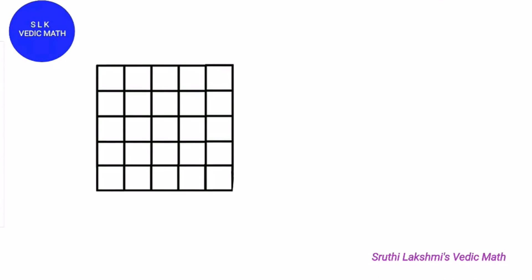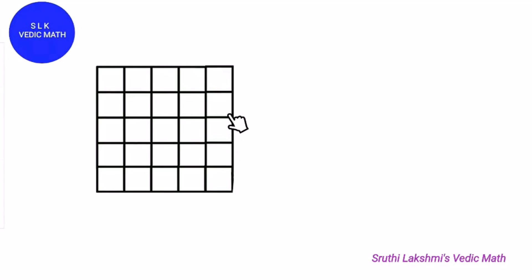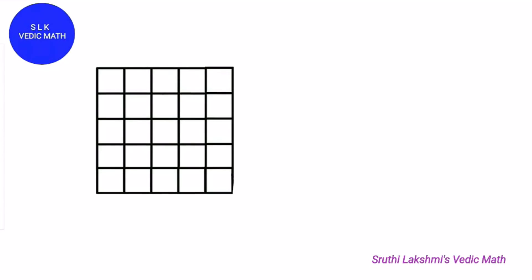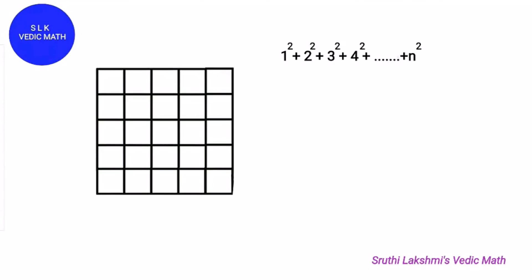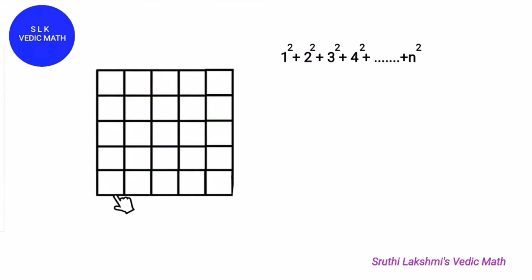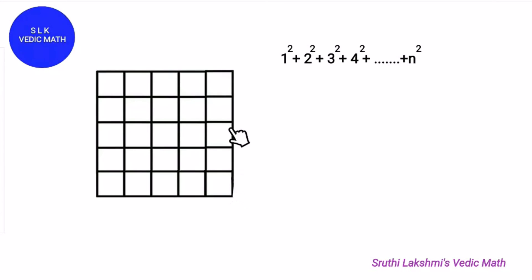Now you know how to find how many squares there are in an n by n grid. Try this example: how many squares are there in this 5 by 5 grid? Pause this video right now and unpause when you want to see the solution. The formula is 1² + 2² + 3² up to n². Since n is 5 — it is a 5 by 5 grid — you add up the square numbers until you get to the size of your big square, which is 5 by 5.